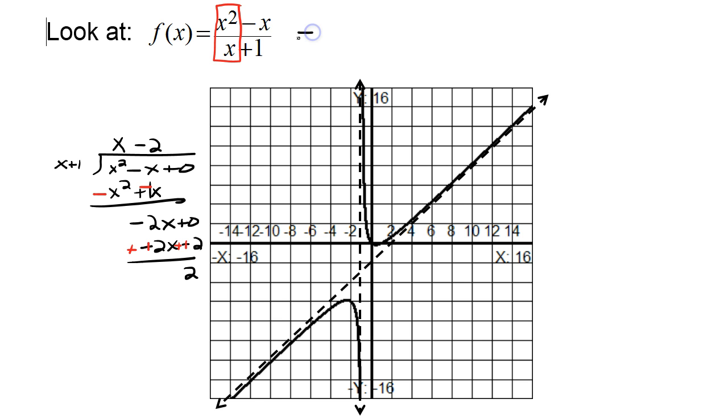Which means I could write this as x minus 2 plus my remainder. The remainder would be put over x plus 1. And this part here is going to be so insignificant when x gets really large. It doesn't matter what the remainder is. When x gets large, this entire fraction is going to be so small, it's not going to affect anything. So this equation, if I do the long division and write it differently, when x is really large, it looks pretty much like y equals x minus 2. And that is your slant asymptote.